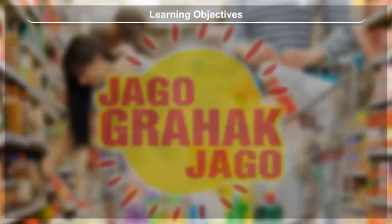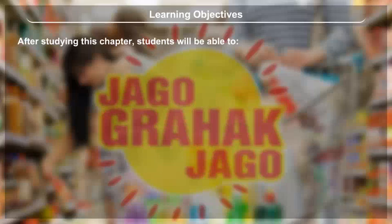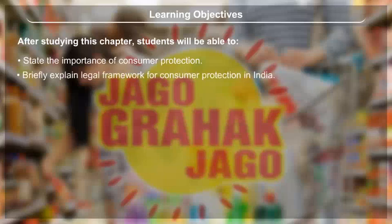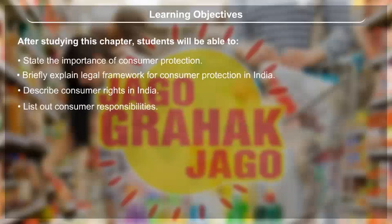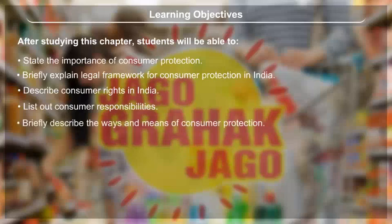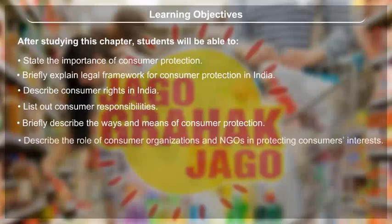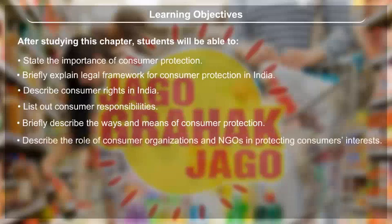Learning Objectives. After studying this chapter, students will be able to: state the importance of consumer protection, briefly explain the legal framework for consumer protection in India, describe consumer rights in India, list out consumer responsibilities, briefly describe the ways and means of consumer protection, and describe the role of consumer organizations and NGOs in protecting consumers' interests.